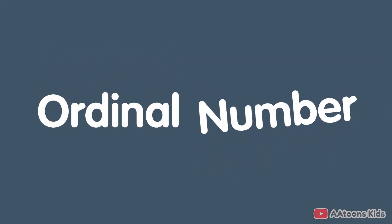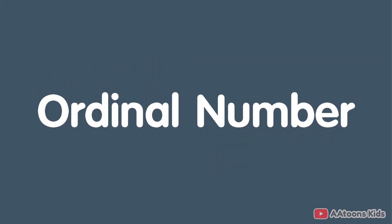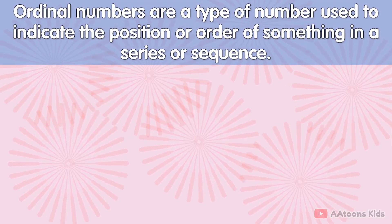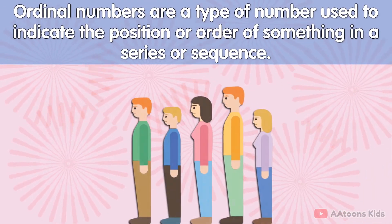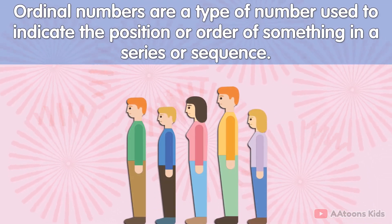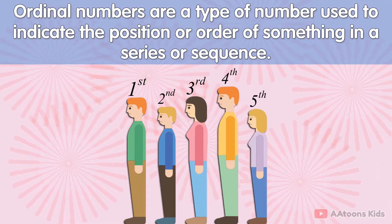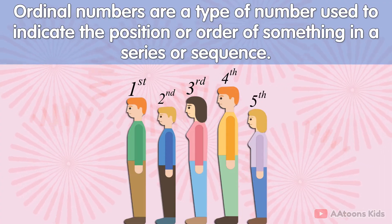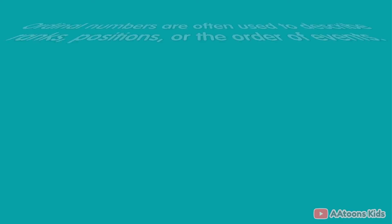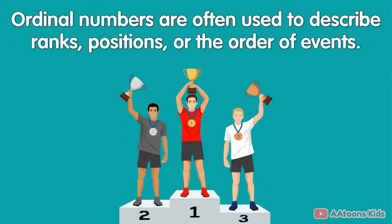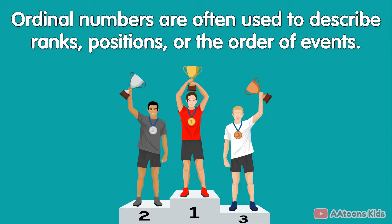Ordinal Numbers. Ordinal numbers are used to indicate the position or order of something in a series or sequence. They are often used to describe ranks, positions, or the order of events.